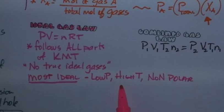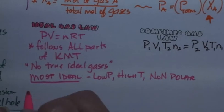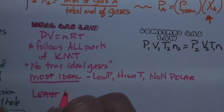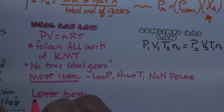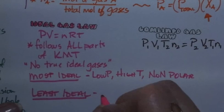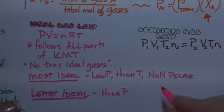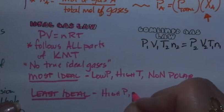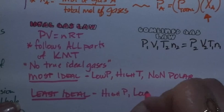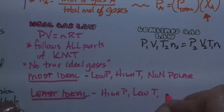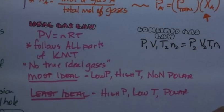The least ideal gases are the opposite: high pressure — cramming molecules close together so they're more like a liquid; low temperature — cooling them down; and polar — meaning they're attracted to each other. The closer a gas is to condensing, the less ideal it is.